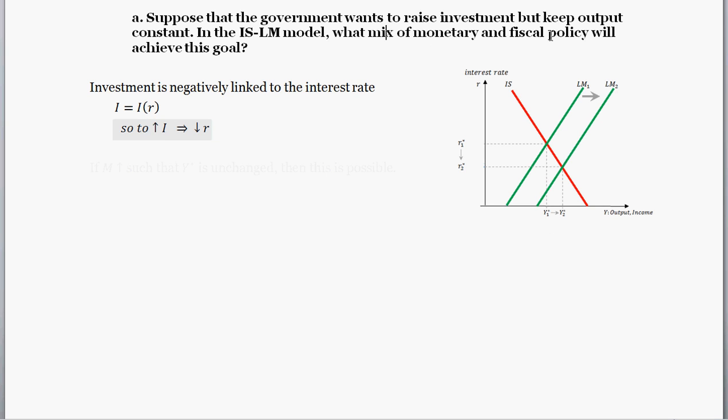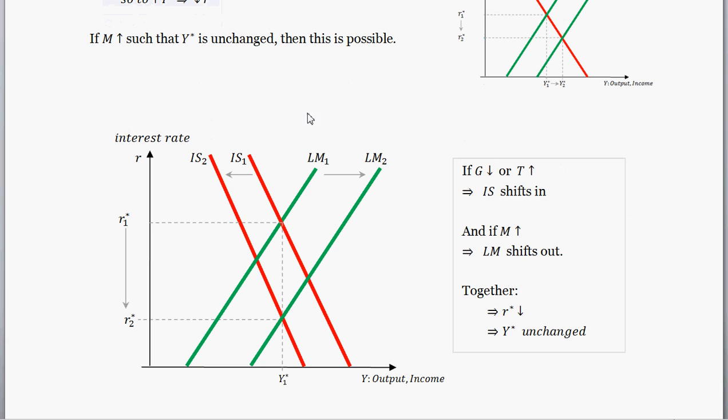But in this policy mix, the goal is to keep output constant. So what other policy mix can we include in addition to this monetary expansion to ensure that interest rates stay down, therefore investment up, but keep output constant? Well, what we could do is the following. In addition to the shift out LM curve, we could shift in the IS curve. There's two ways we could have a shift inward of that IS curve. We could either decrease government spending or we could increase taxes. Either one, the IS curve is going to shift inward or to the left. And then given the increase in the money supply, that LM curve is going to shift out or to the right.